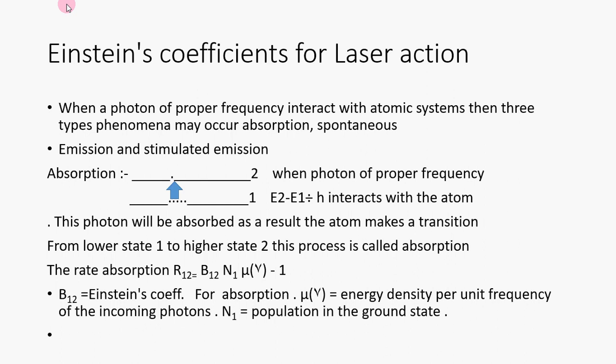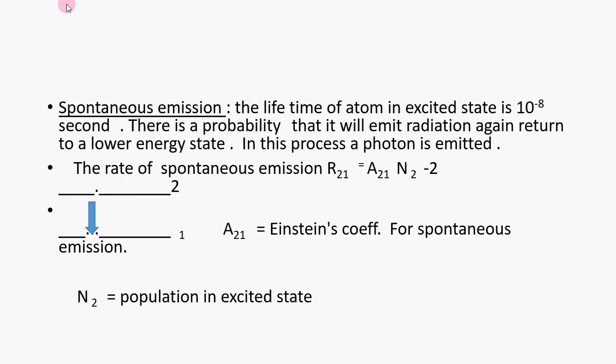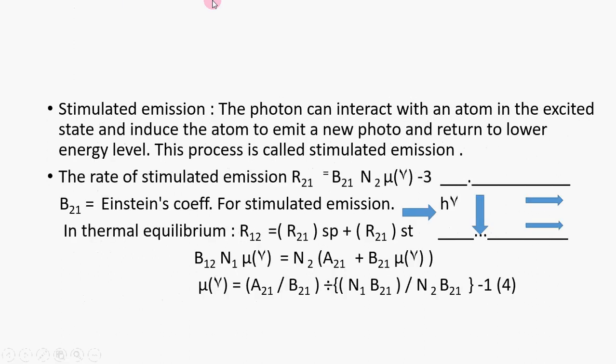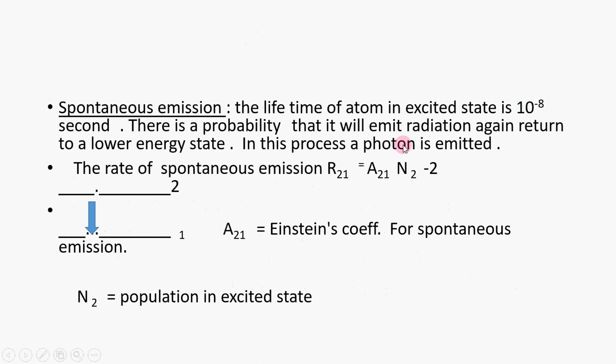How does the atom return? If it returns itself, then the phenomenon is spontaneous emission. The lifetime of an atom in excited state is 10^-8 seconds. So there is a probability that it will emit radiation and again return to a lower energy state. This process is called spontaneous emission. In this process, a photon is emitted. The rate of spontaneous emission R21 equals A21 N2, where A21 is Einstein's coefficient for spontaneous emission and N2 is the population in excited state, that means number of atoms in excited state. If the atom does not return itself...